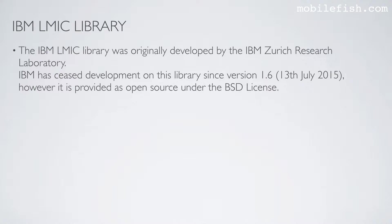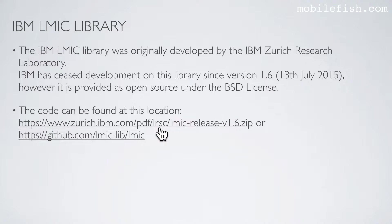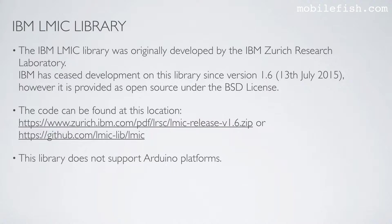The IBM LMIC library was originally developed by the IBM Zurich Research Laboratory. IBM has ceased development on this library since version 1.6. However, it is provided as open source under the BSD license. The code can be found at this location or this location. This library does not support Arduino platforms.